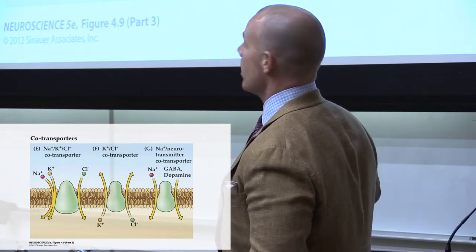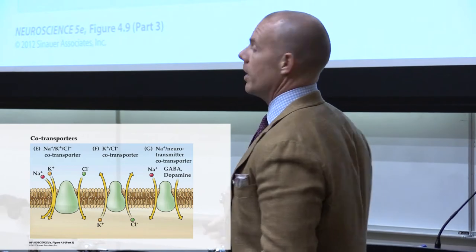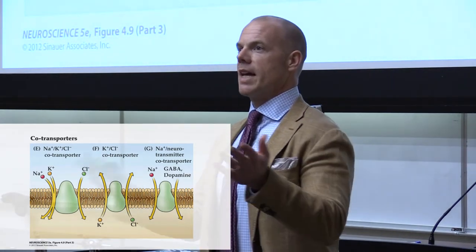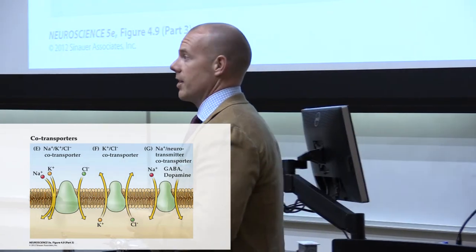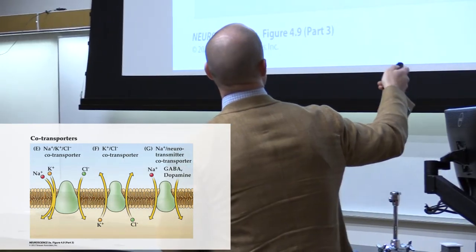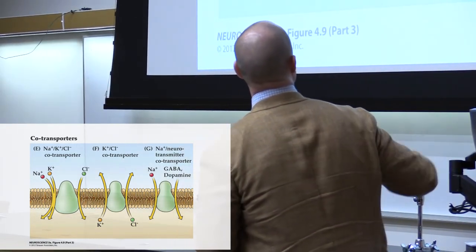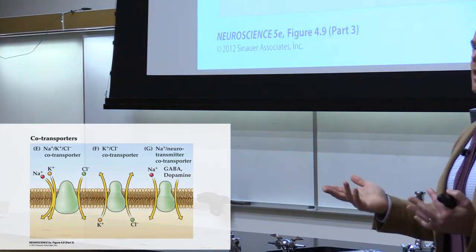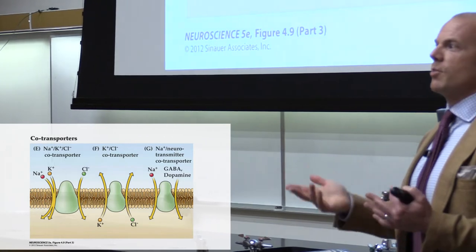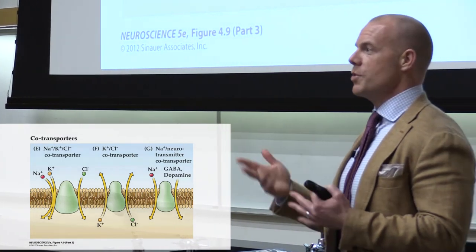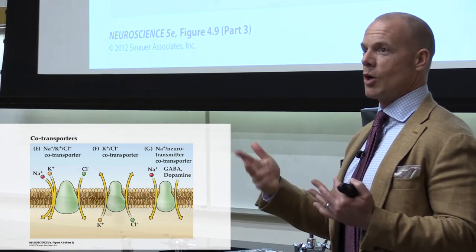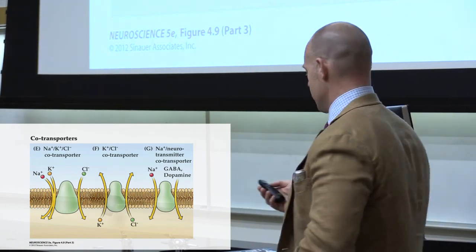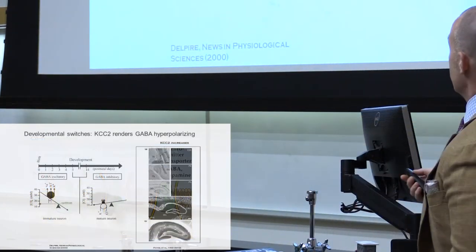We also have the potassium-chloride co-transporters — the KCCs — which work in the opposite fashion. They extrude chloride, exporting one potassium molecule and one chloride molecule. So these two things counterbalance each other. The key transporters are the NKCCs and the KCCs. Some of the neurotransmitter receptor transporters also move ions, and you can actually record the electrophysiological activity of these because they move ions too.